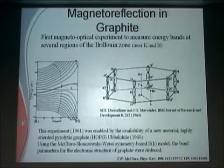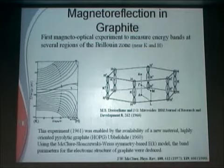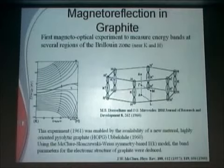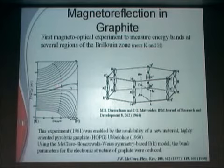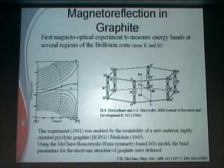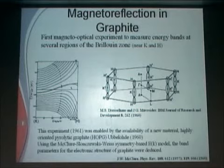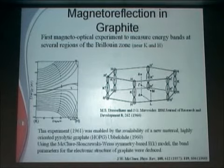At that time we didn't have nanostructures, so we didn't have any quantum confinement — we achieved quantum confinement using the magnetic field. These are like quantum levels that you can make by quantization. We studied these transitions, and the upshot of that work was to establish what the electronic structure was and what the nature of the Fermi surface was.